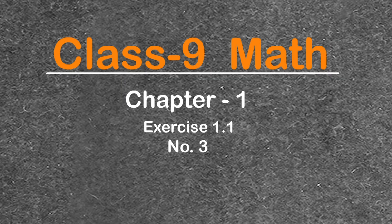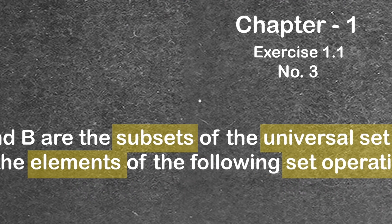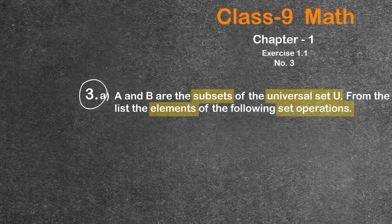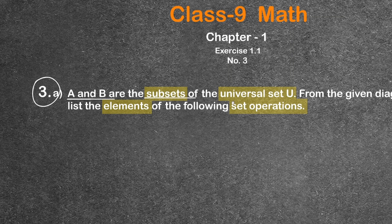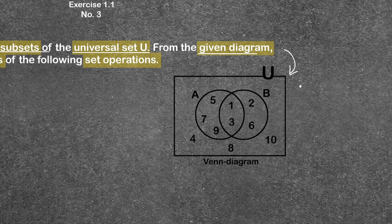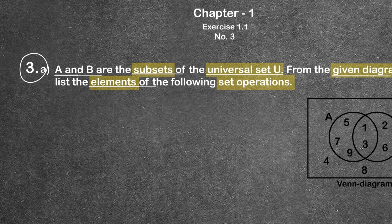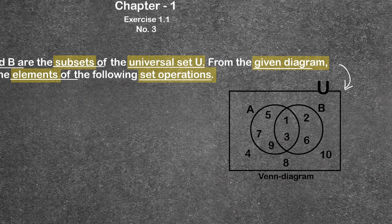Alright everyone, this is Class 9 Math, Chapter 1, Exercise 1.1, question number 3. In this problem, A and B are the subsets of universal set U. From the given diagram, list the elements of the following set operations.